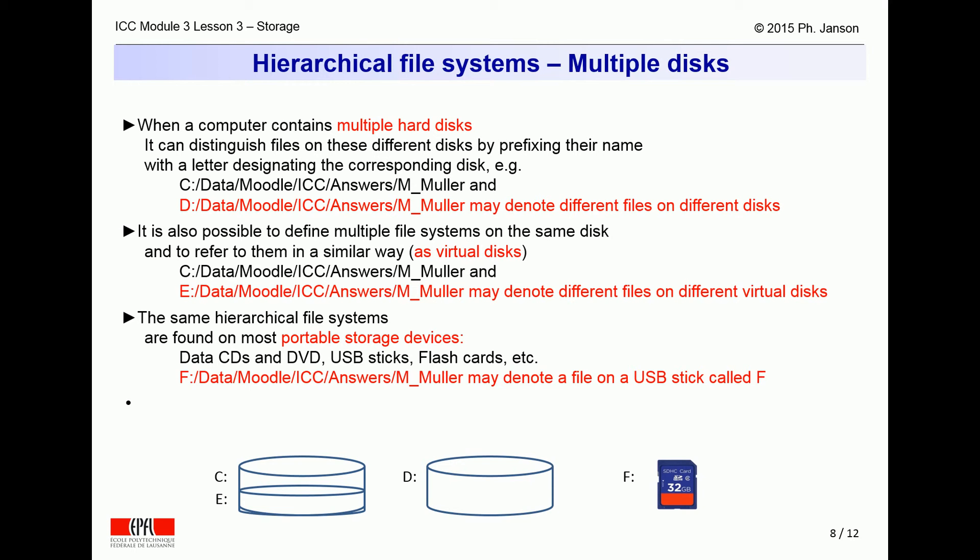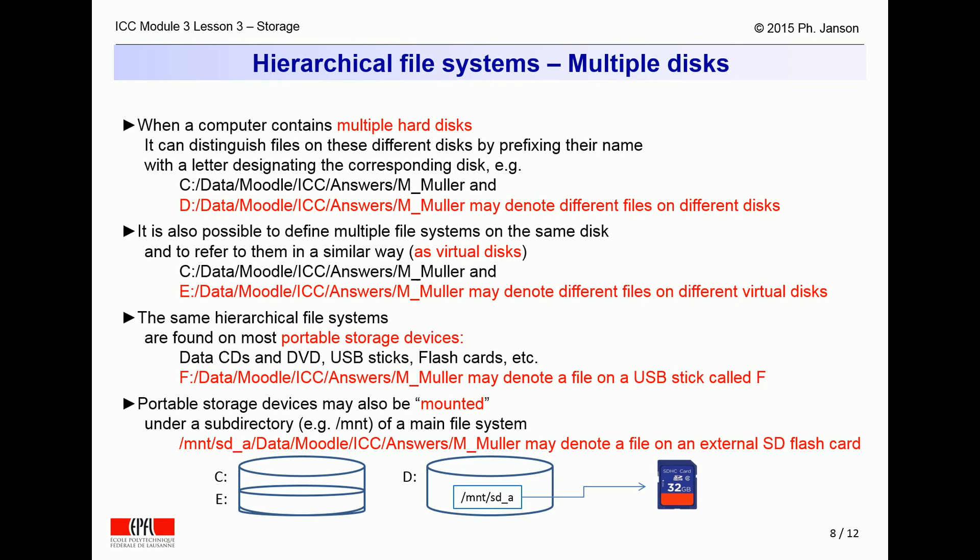Similar hierarchical file systems can be found on devices other than hard disks. CDs, DVDs, USB sticks, flashcards, etc., can all carry their own file systems referred to by their own letters such as F. Just as it is possible to define multiple file systems on the same device, it is possible to define file systems spanning multiple devices, where additional devices are defined as mounted onto higher-level devices.